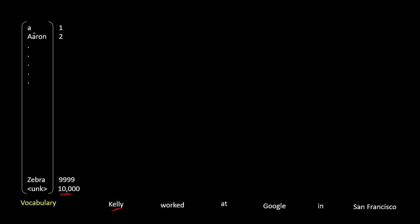For example, the first word in our vocabulary could be 'a', the second 'Aaron', and the last known word might be 'zebra', followed by an unknown token for any word we haven't seen. Let's say the word 'Kelly' appears at position 3456, and the word 'work' appears at position 8989 in the vocabulary.